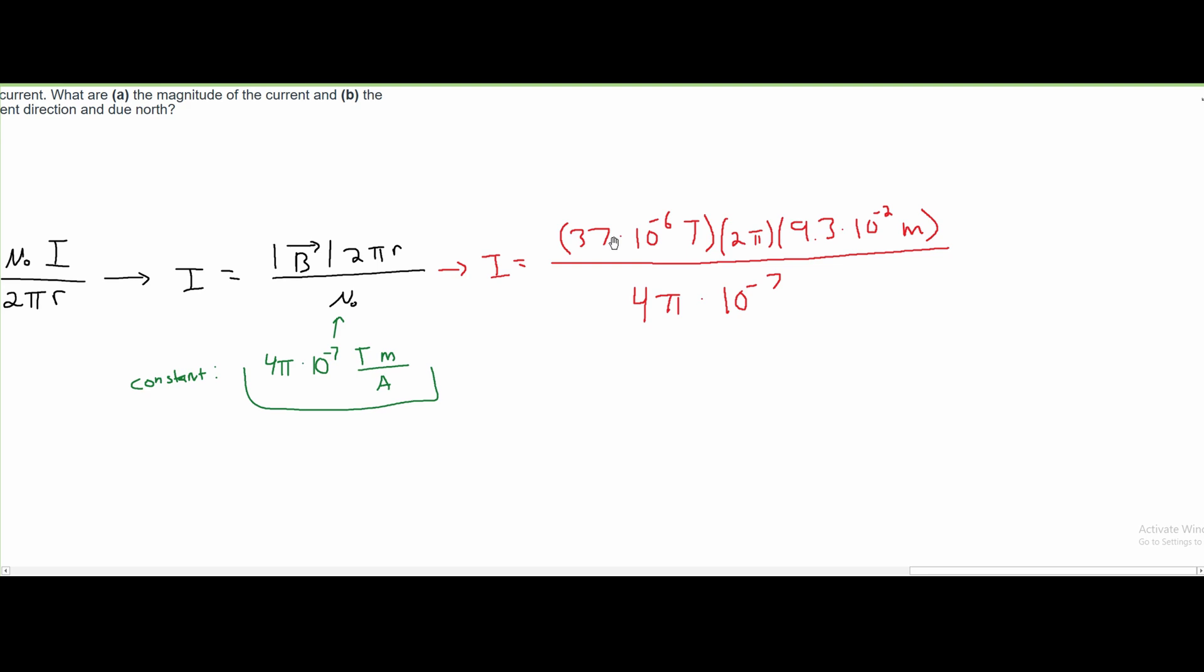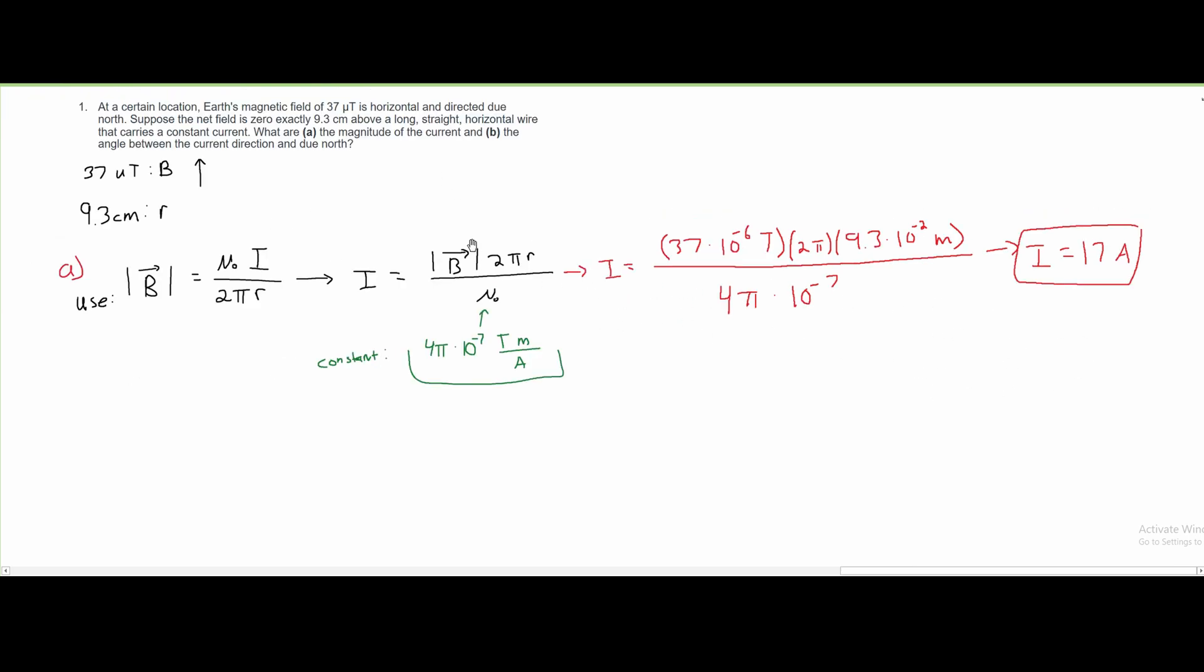And from here, we can just plug all of this into our calculator. And after we do this, we are going to get approximately I is equal to 17 amps. This is the magnitude of the current for part A.